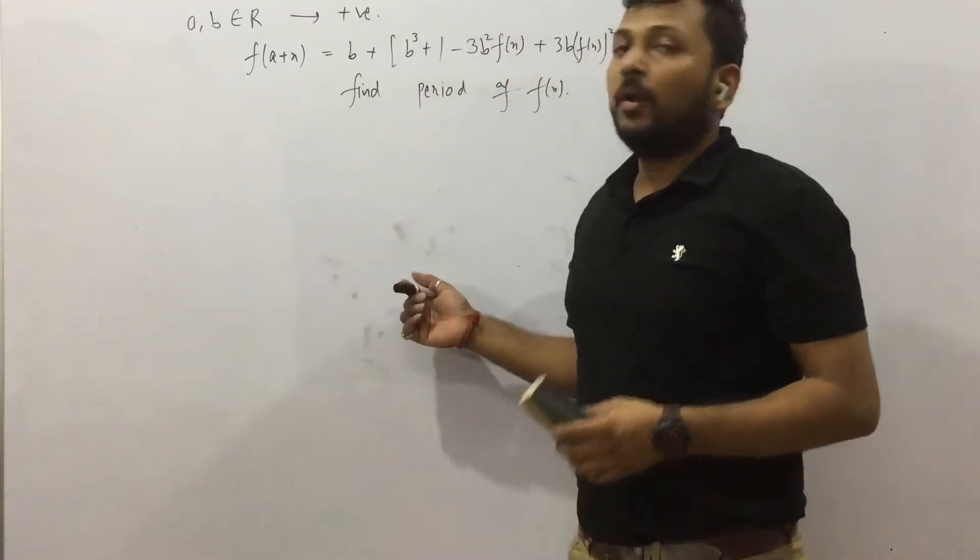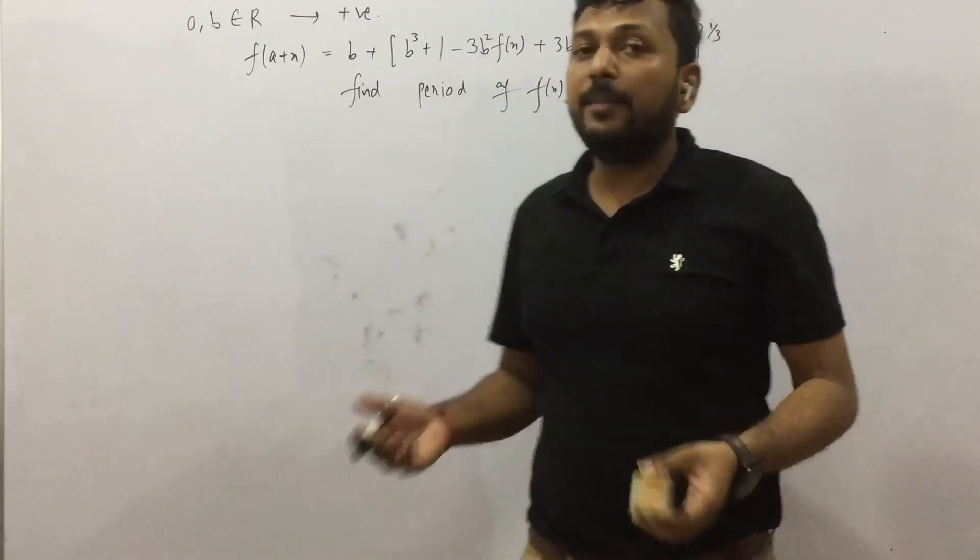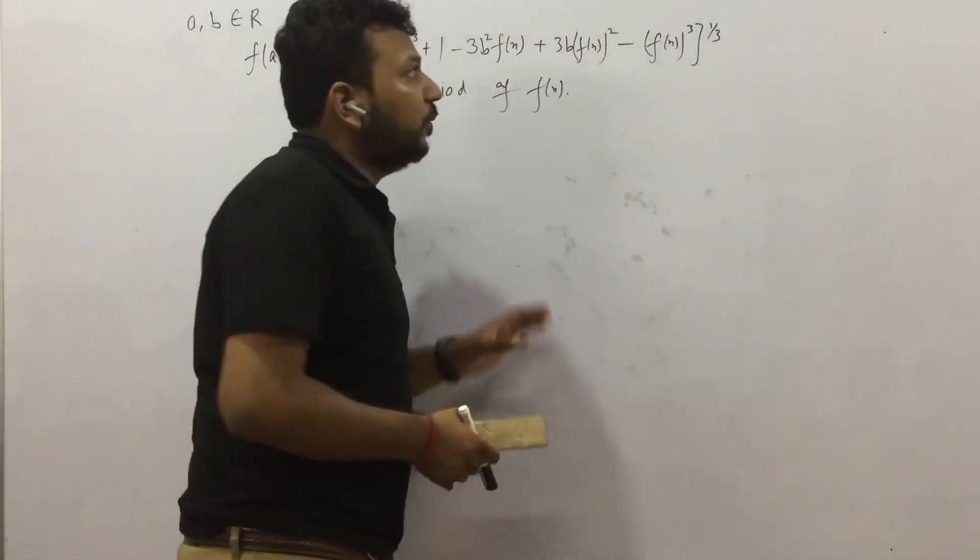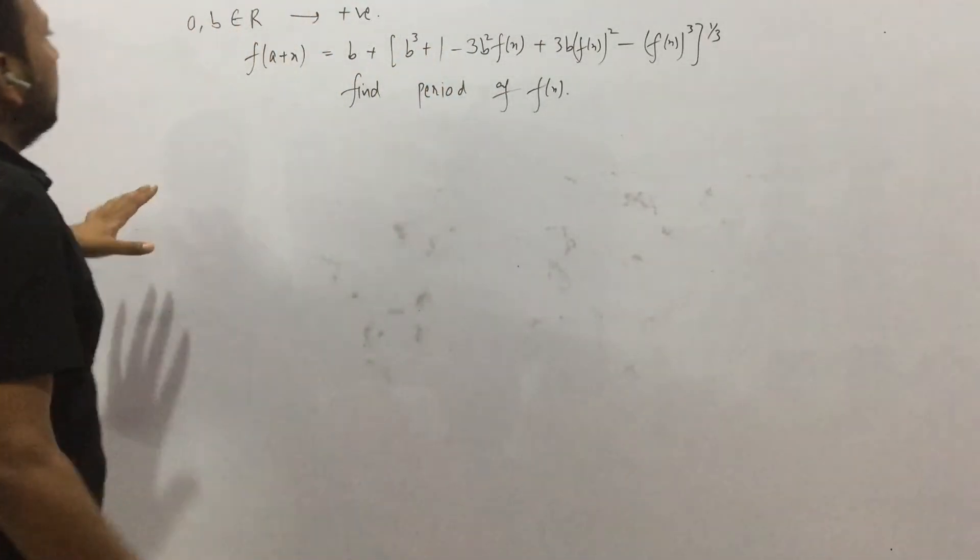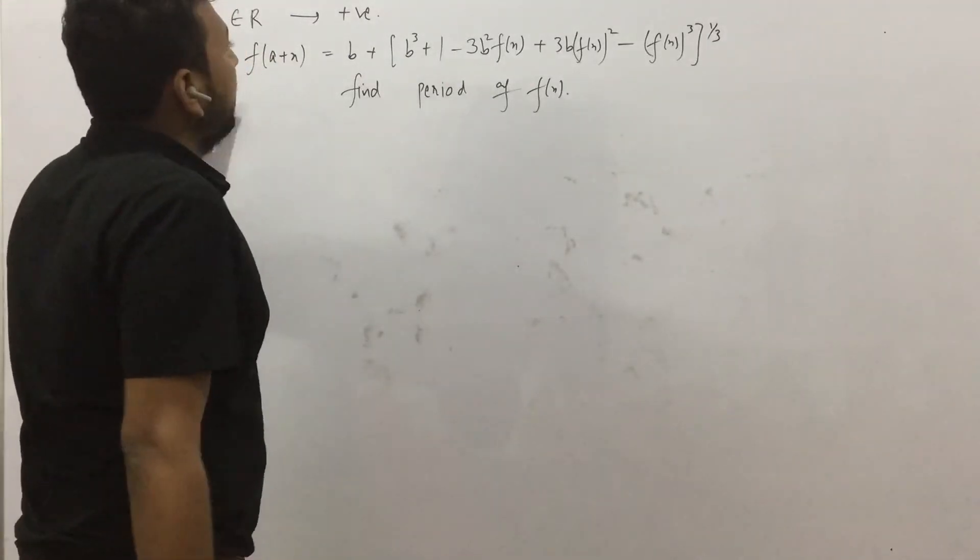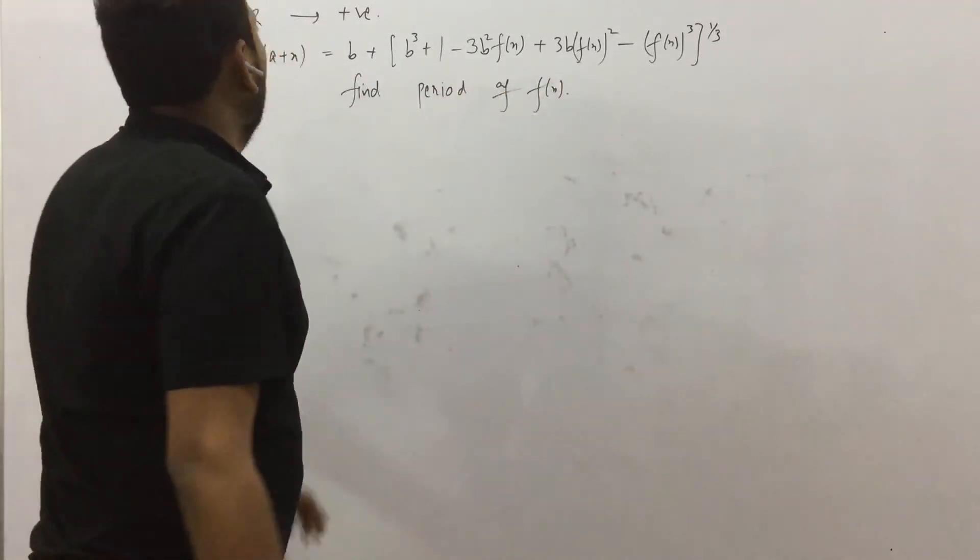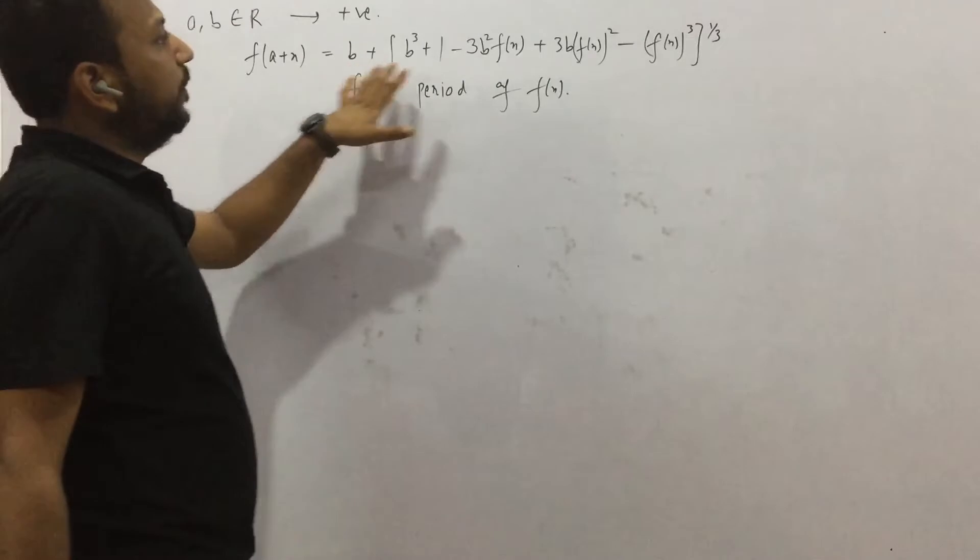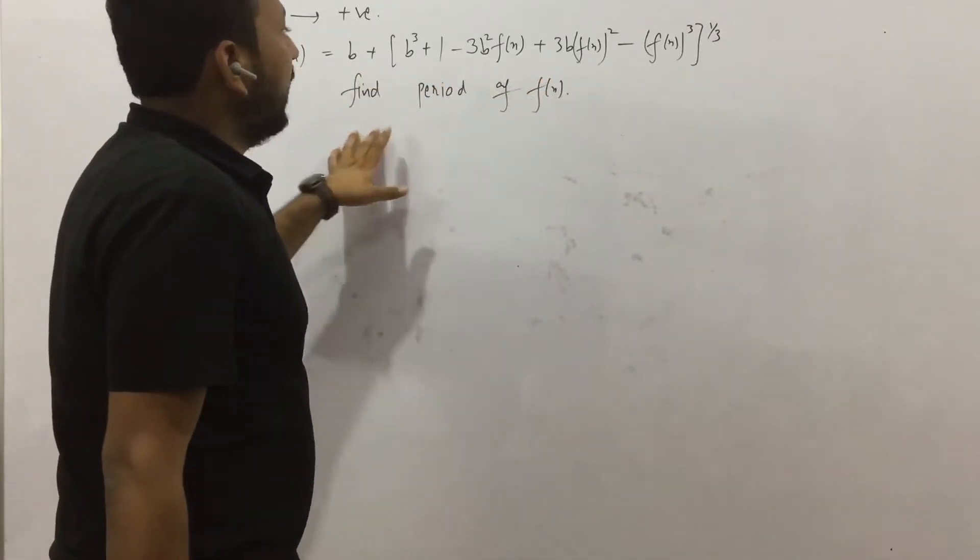Hey friends, welcome back. This is another video on mathematics for JEE Mains and JEE Advanced, so it can be helpful for both. The question is: a and b belong to R, which are positive numbers—they are real numbers—and we are given this expression f(a+x) equals b plus something like this. You need to find the period of f(x).